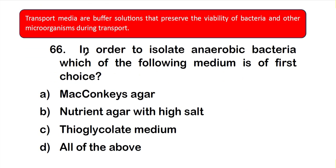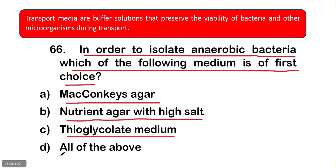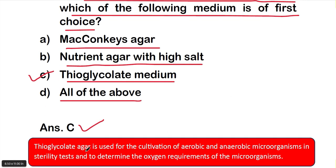Question number 66: To isolate anaerobic bacteria, which of the following media is the first choice? Options are: A) MacConkey agar, B) nutrient agar with high salt, C) thioglycolate medium, D) all of them. The right answer is option C, thioglycolate medium. It is used for cultivation of aerobic and anaerobic microorganisms in sterility tests and to determine oxygen requirements of microorganisms.